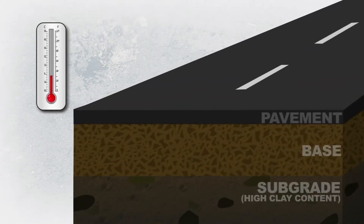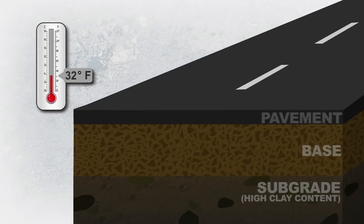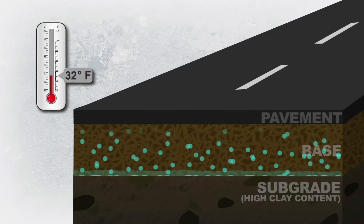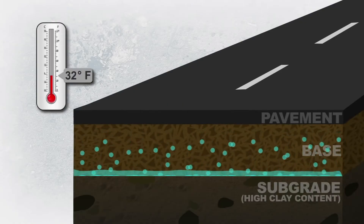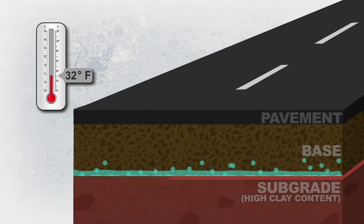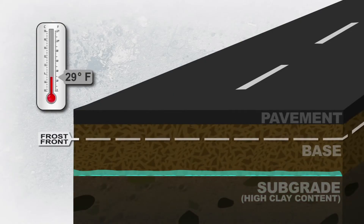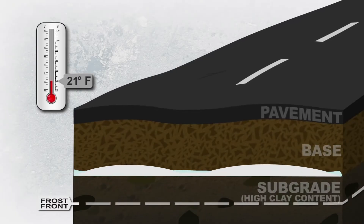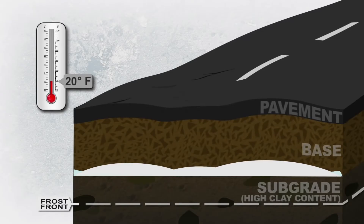Frost action can also occur in a road constructed with a granular base over a subgrade that has high clay content. The water drains through the porous base, but stops at the less permeable subgrade. Over time, more and more water accumulates. Because the water can't penetrate the subgrade, it perches above the subgrade. As winter continues and freezing temperatures go deeper and deeper, the water freezes, expands upward and damages the pavement surface layer above.